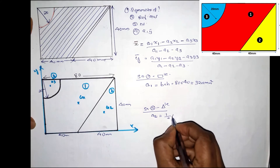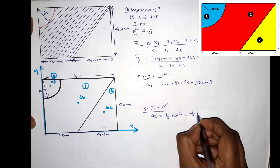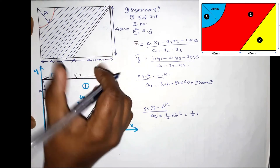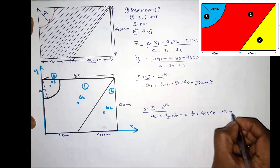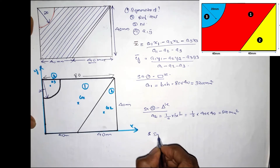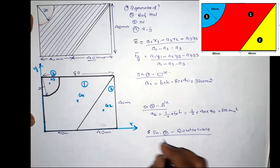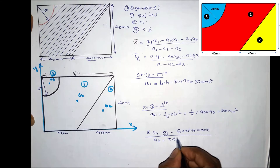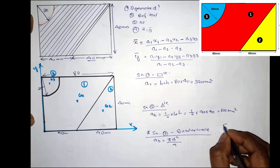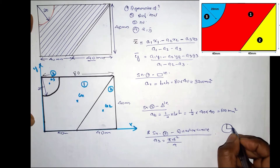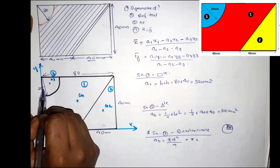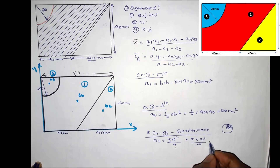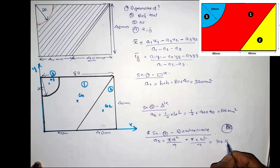Section 2 is a triangle. Area A2 = ½ × base × height = ½ × 40 × 40 = 800 mm². Section 3 is a quarter circle. Area A3 = π·r² / 4 = π × 20² / 4 = 314.16 mm².